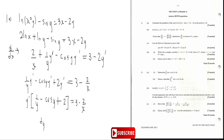Dividing both sides, dy/dx equals (3 minus 2/x) divided by (1/y minus cos(y) plus 2).